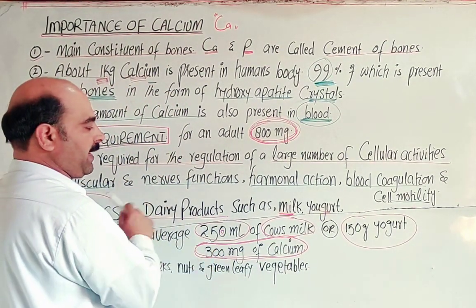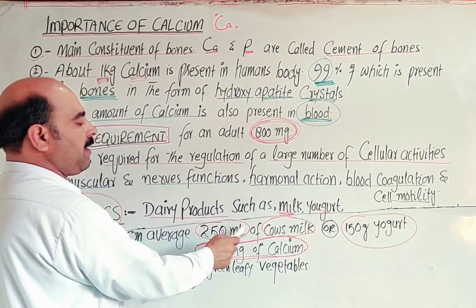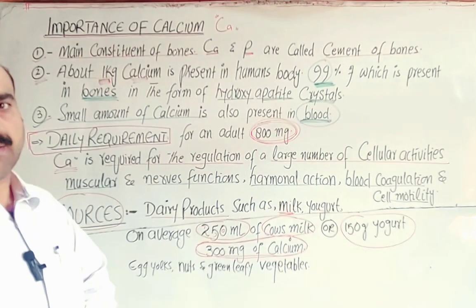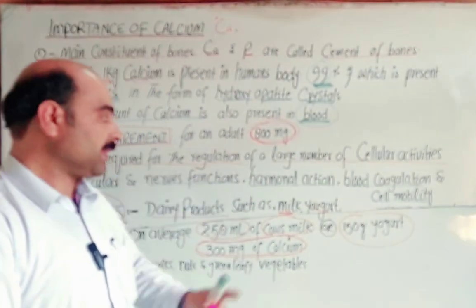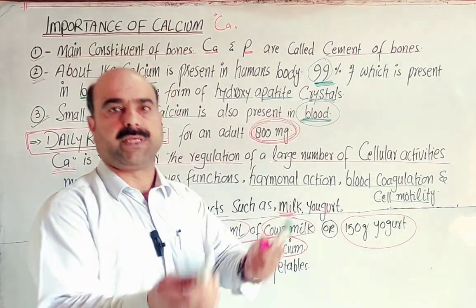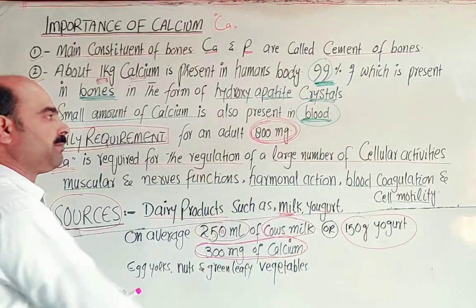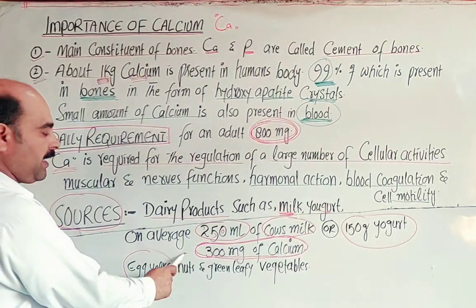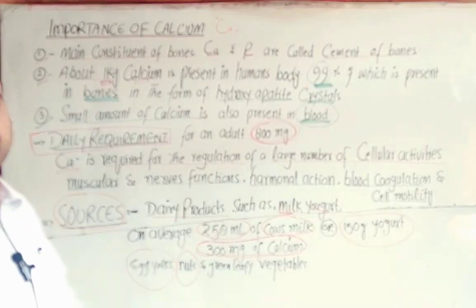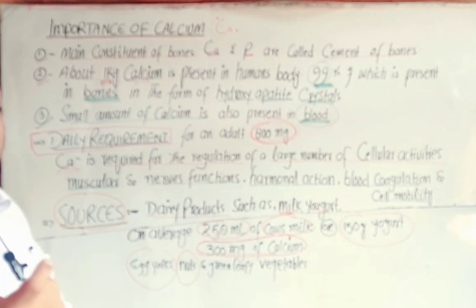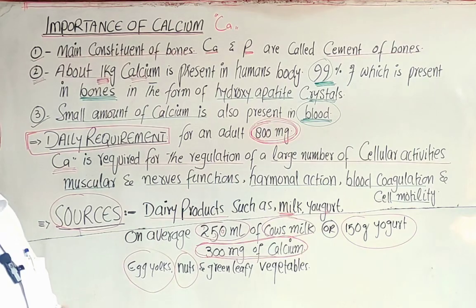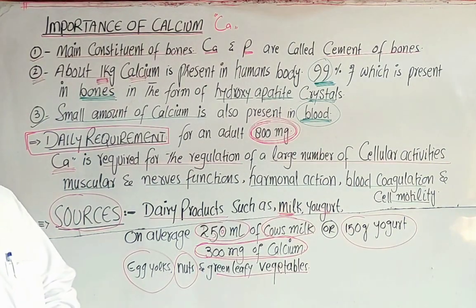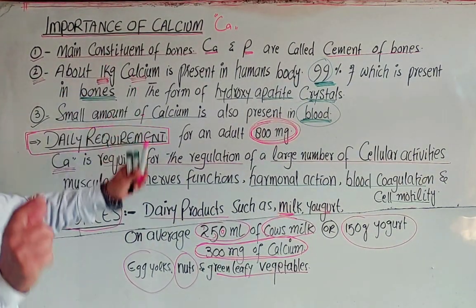So from 250 ml of cow's milk plus 150 grams of yogurt, the body receives around 600 mg of calcium out of the 800 mg daily requirement. Additional sources include eggs, nuts such as groundnuts (peanuts), walnuts, beans, leguminous plants and legumes, and green leafy vegetables, all of which also contain calcium.